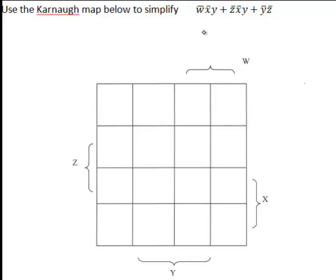If we consider the first term in this expression, w̄x̄y means w̄ and x̄ and y. Looking on the Karnaugh map, w̄ is the first two columns, x̄ is the first two rows. So to satisfy both w̄ and x̄, we're looking at these top four squares here.